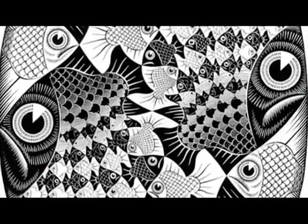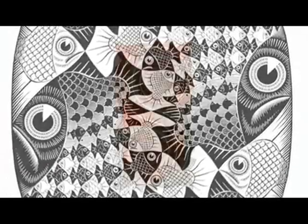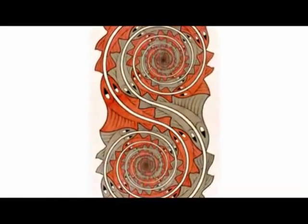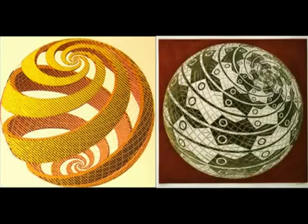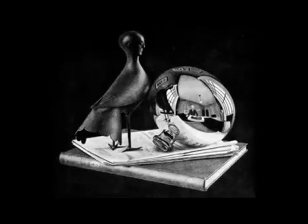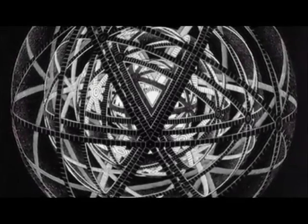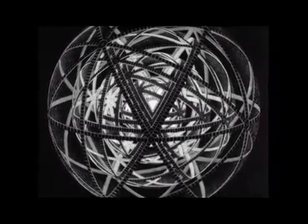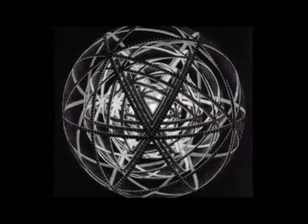Around 1956, Escher's interests changed again, taking regular division of the plane to the next level by representing infinity on a fixed, two-dimensional plane. He had put his designs onto a variety of three-dimensional objects, such as columns and spheres, again in an attempt to impart an endless perspective to his work. He later tried working with the concept of similarities, using identical motifs of diminishing size arranged in a series of concentric circles.